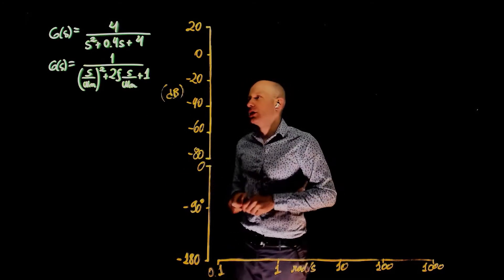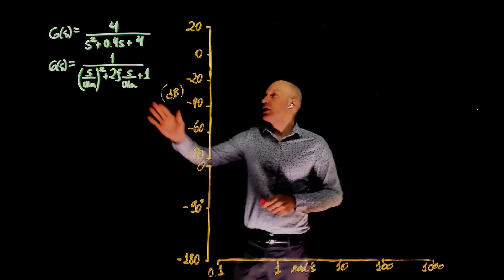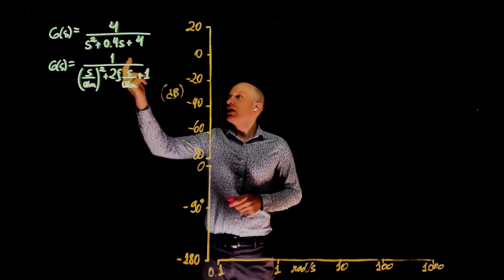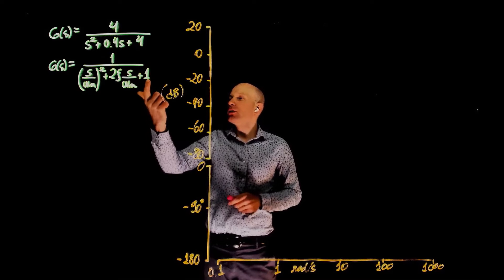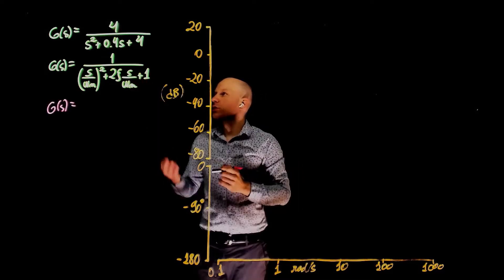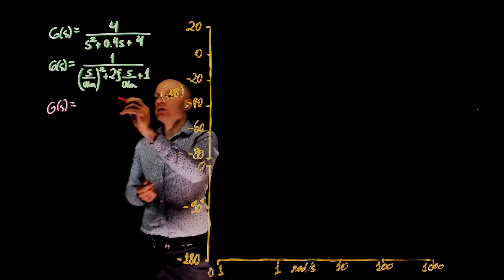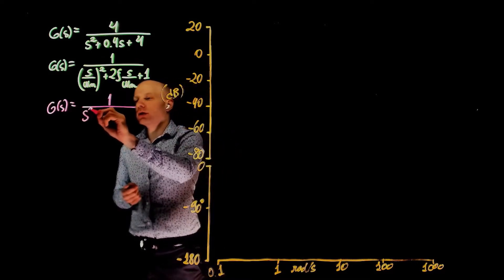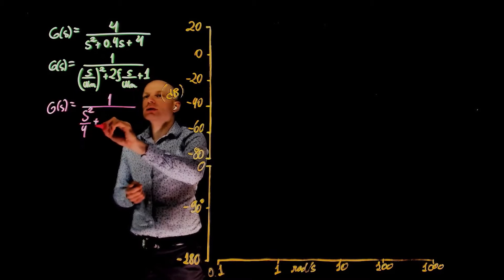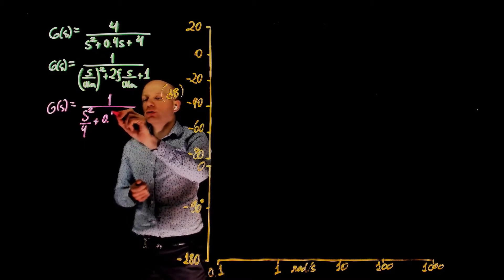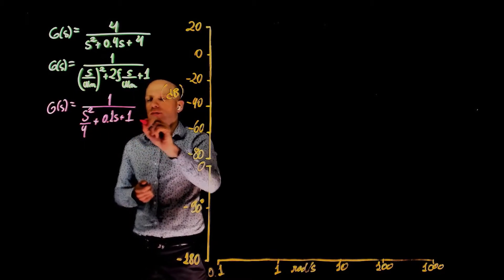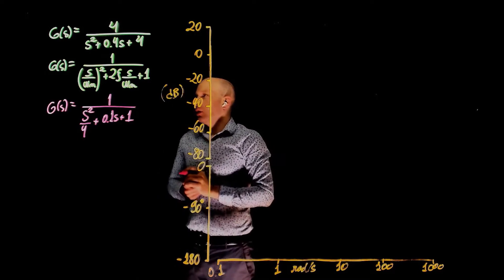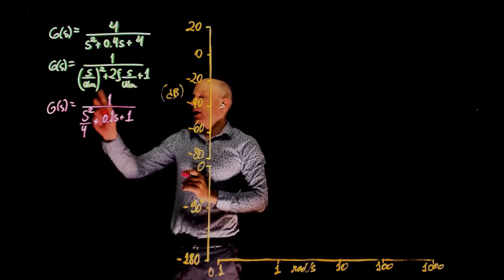Looking at this equation, if we divide everything by 4, the top and the bottom of the equation, you get one on top. So G of s now becomes 1, and everything in the denominator divided by 4 we have s squared over 4 plus 0.1 s plus 1. Now we need s divided by omega n all squared.